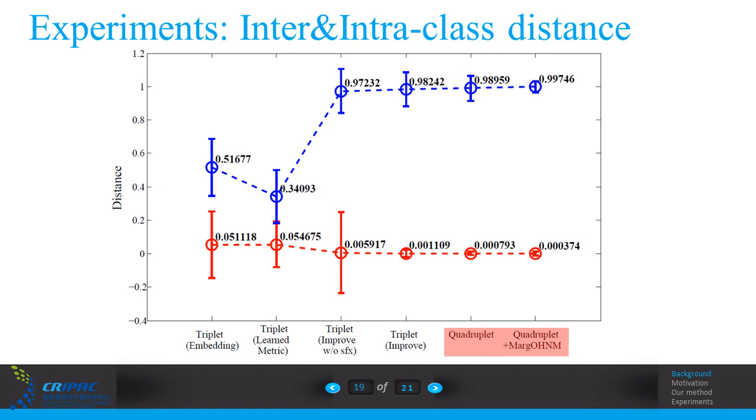Here we show the inter- and intraclass distance. The blue line indicates the intraclass distance, and the red line means the interclass distance. We can see our quadruplet loss can reduce the intraclass distance and enlarge the interclass distance.